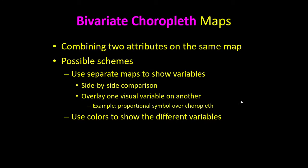Overlay would be where you have one particular visual variable on top of another one. For example, we're going to see a choropleth map as the base, and then on top of that we'll put the proportional symbols — we can make those 2D, 3D, whatever. So we take essentially two maps, one a proportional symbol map and the other a choropleth map, and merge them together to form one combined map.